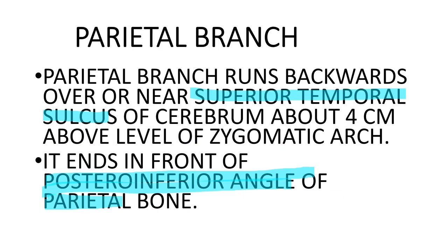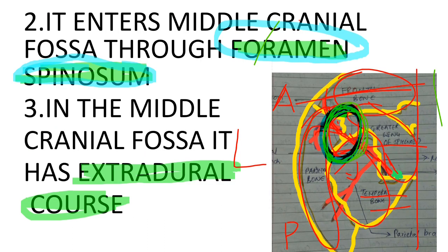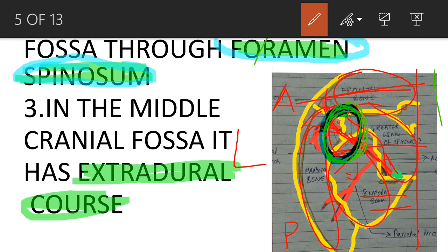The parietal branch runs backwards over or near the superior temporal sulcus of the cerebrum, about four centimeters above the level of the zygomatic arch. It ends in front of the posteroinferior angle of the parietal bone, as shown in the diagram.